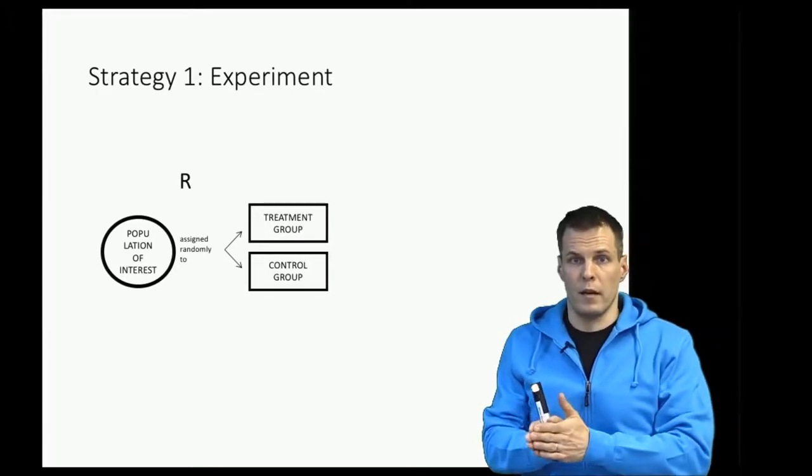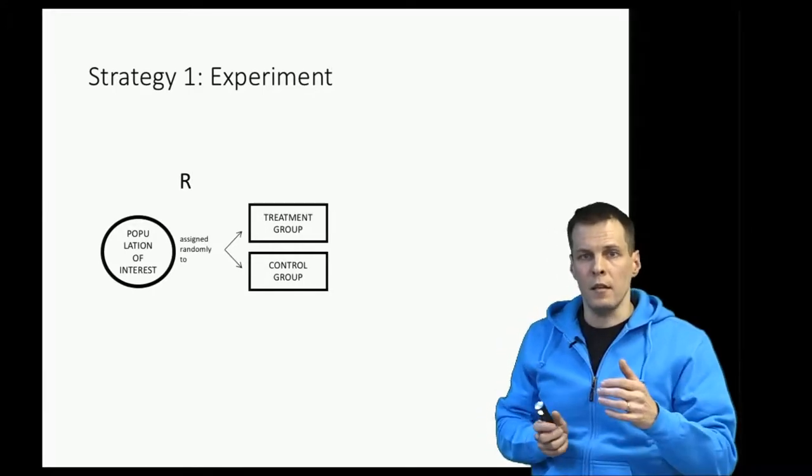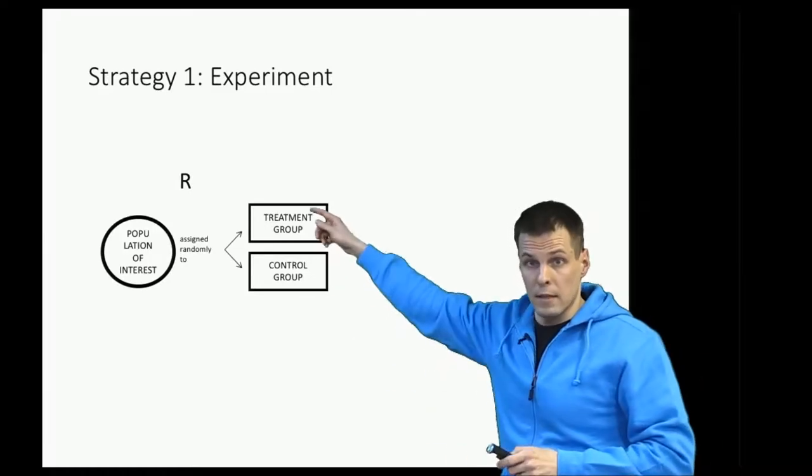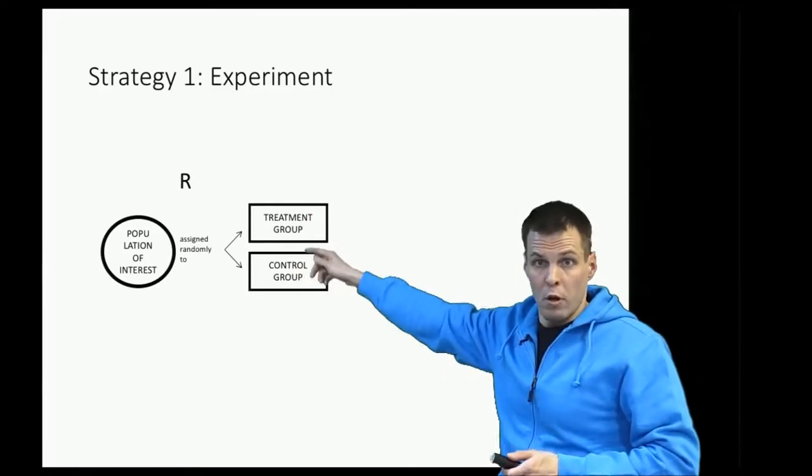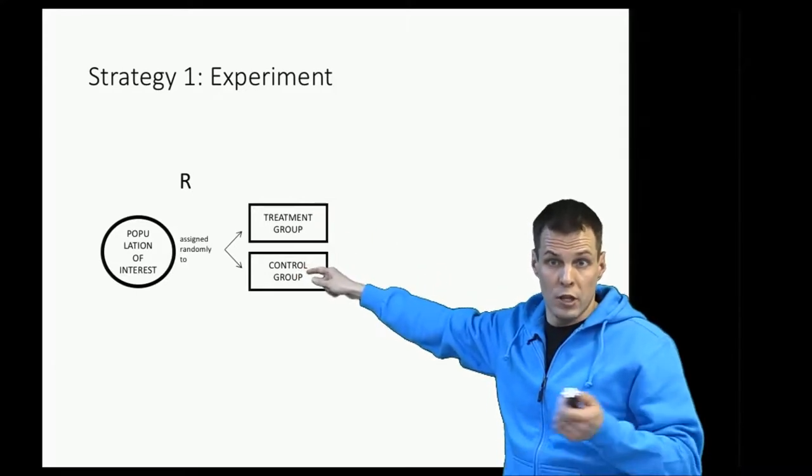One is called the treatment group and another one is the control group. Because we select those two groups randomly, there are no differences statistically between these two groups, or if there are some differences then it's due to chance only.